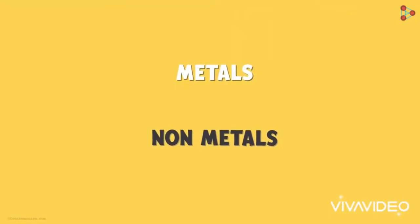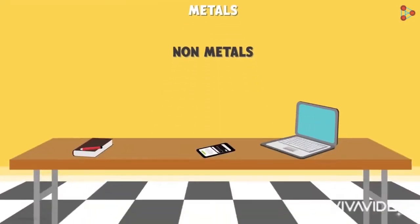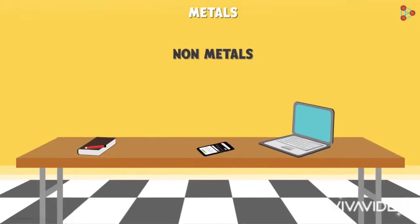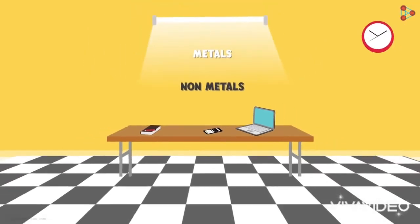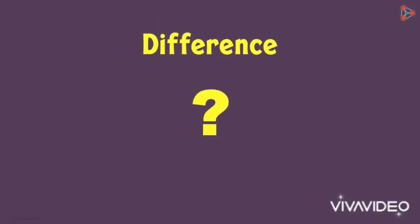You must have all heard the terms metals and non-metals. Can you look around and see if they exist in your surroundings? What is your table made up of — aluminium or wood? What about the phone or the laptop you're viewing this video on? Is it made up of metals and non-metals? As a matter of fact, it is. Almost everything around you will be made up of either a metal or a non-metal. But how do you differentiate between the two?